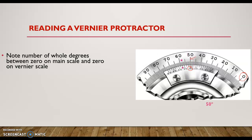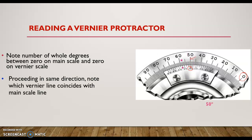Next, find the vernier scale reading. Proceed in the same direction as the main scale reading — here, counterclockwise. When moving counterclockwise, consider the left-side vernier scale. When moving clockwise, consider the right-side vernier scale. Note which vernier line coincides with a main scale line.